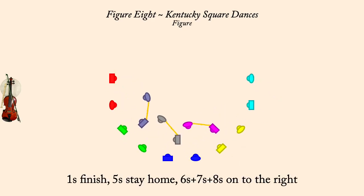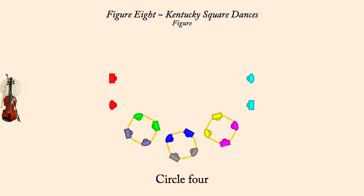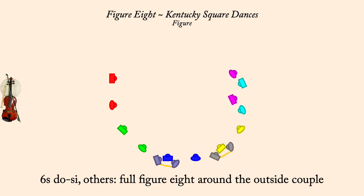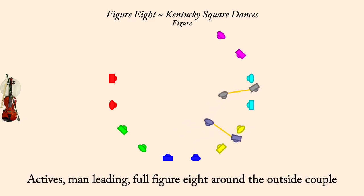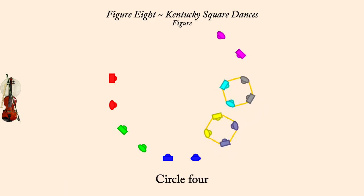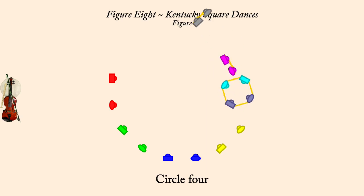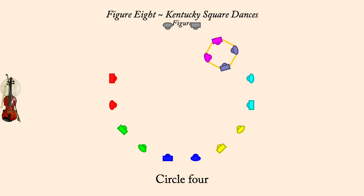On to the right, full figure eight around the outside couple. Circle left four. On to the right, dough C or figure eight. Circle left four. On to the right, full figure eight around the outside couple. Circle left four. On to the right, dough C or figure eight. Circle left four. On to the right, full figure eight around the outside couple. Circle left four. On to the right, dough C or figure eight. Circle left four. On to the right, dough C.